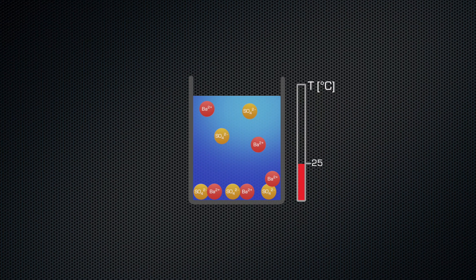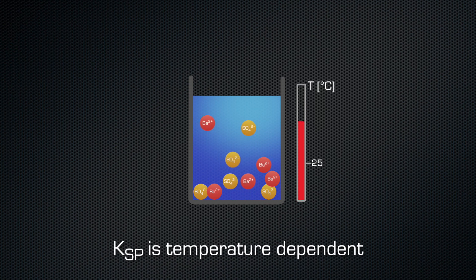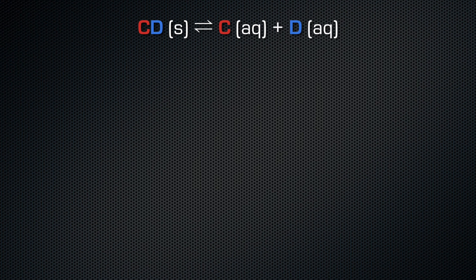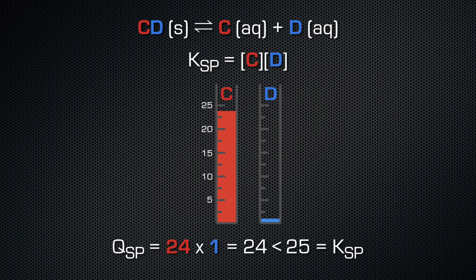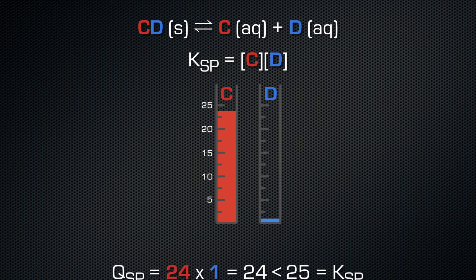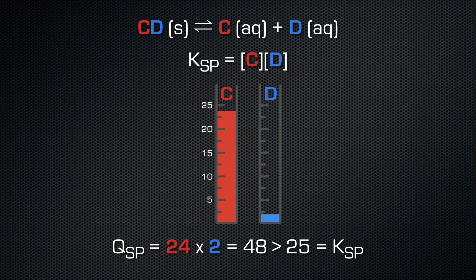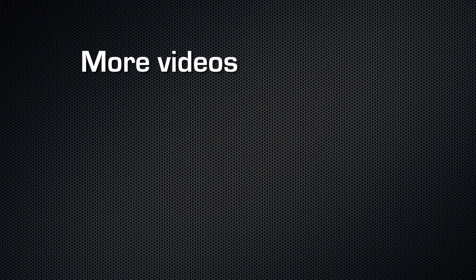By the way, the solubility product is normally reported at 25°C. If you increase the temperature of the solution, the solubility of the compound increases as well. To wrap up: the solubility product is the product of the concentrations of the dissolved ions from a saturated solution. As long as the product of the ions is smaller than or equal to the solubility product, there is no precipitate — even if the concentration of one component is very large. As soon as the solubility product is exceeded, there will be a precipitate. I hope you enjoyed this video — leave a comment below if you have questions, and subscribe to watch the next video.